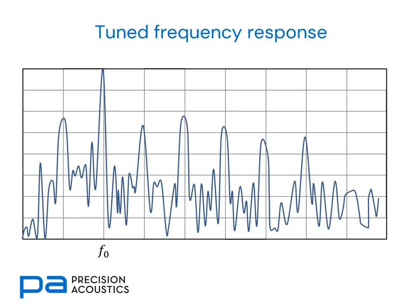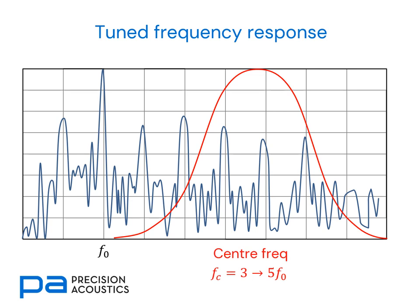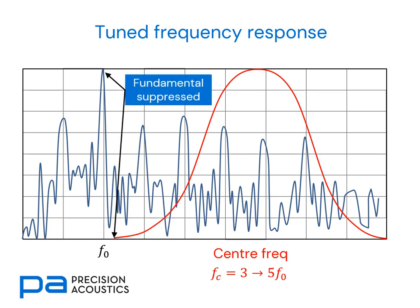So how might we go about addressing that? If we look at our cavitation spectra, we notice that we've got lots of spectral content at higher frequencies which are indicative of cavitation only. They're caused by the fundamental F0, and therefore what we need to do is use a tuned response, shown here in red, that optimises our sensitivity to these higher frequency components. Typically, when designing a passive cavitation detector, we try and ensure that the centre frequency is three to five times the fundamental frequency. This ensures that at F0, the reduction in sensitivity of the PCD is very low — in some cases approaching zero — so that the amplitude of the fundamental in the PCD output signal is very much suppressed.